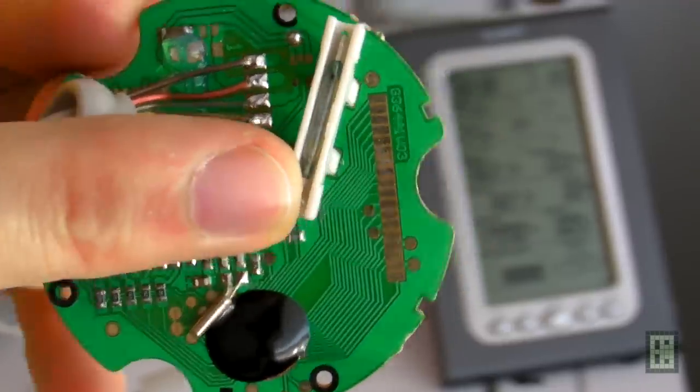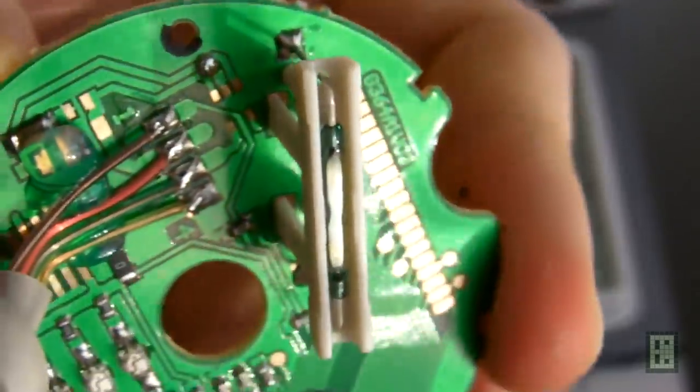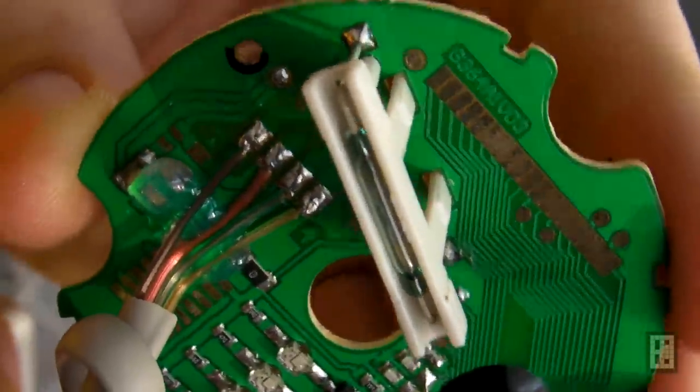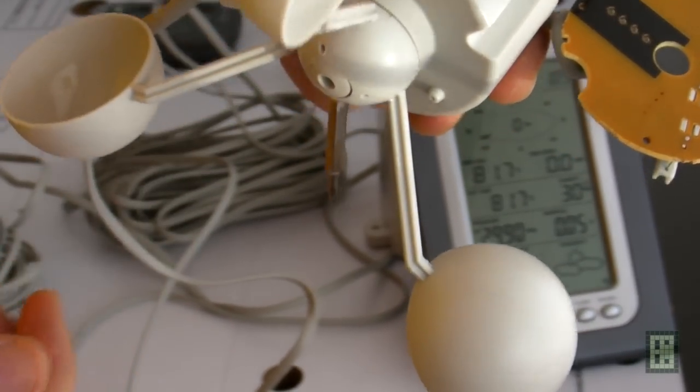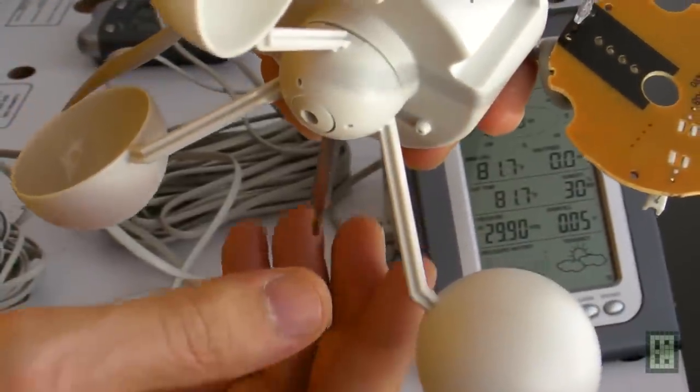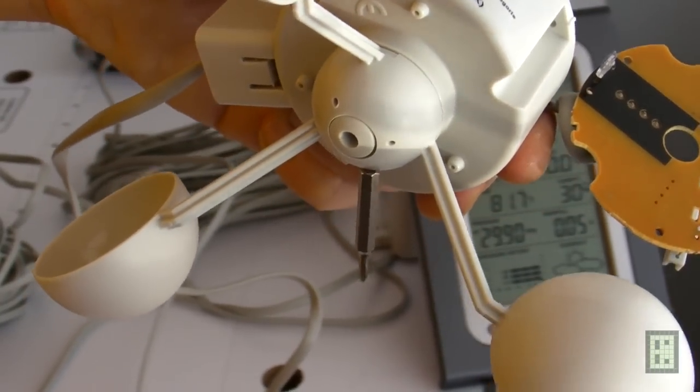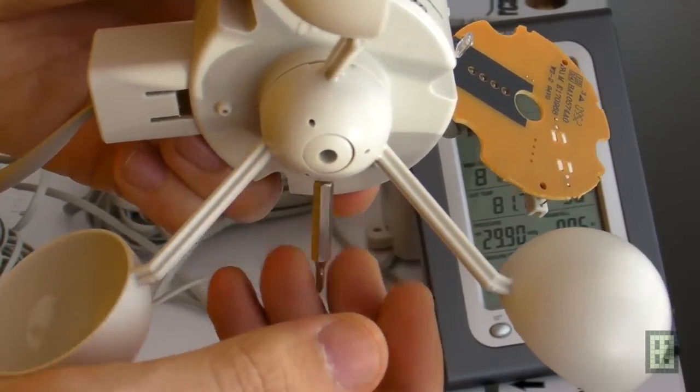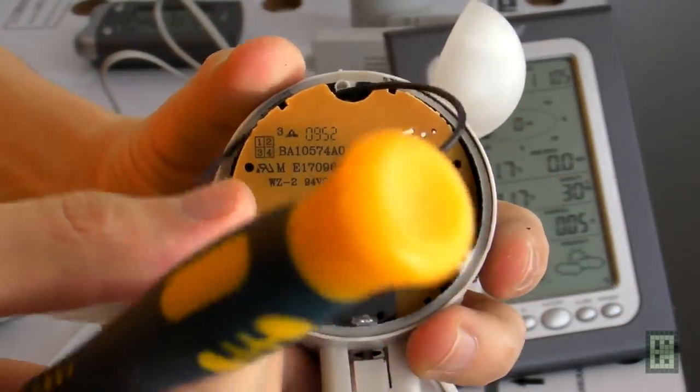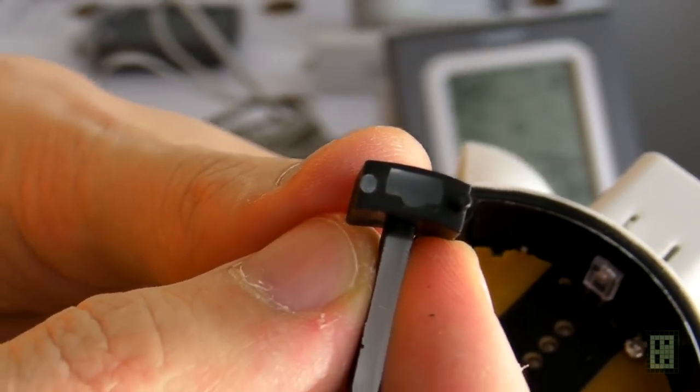This one is a reed switch and there are just two contacts close together inside a glass tube that has some kind of inert gas. When this magnet inside the rotor will be on the same position as the sensor, the two contacts will close and will generate a pulse. This pulse will be registered and the number of pulses in a certain amount of time will give you the wind speed.